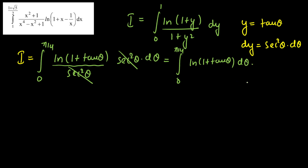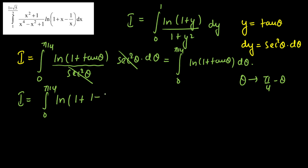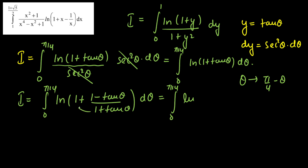Now I'll apply King's property: replace θ by (π/4 - θ), keeping limits intact. This gives another form of the integral: ∫₀^(π/4) ln(1 + tan(π/4 - θ)) dθ. Simplifying tan(π/4 - θ) = (1 - tan θ)/(1 + tan θ), so 1 + tan(π/4 - θ) = 2/(1 + tan θ). This gives ∫₀^(π/4) ln(2/(1 + tan θ)) dθ. Call this equation 2.